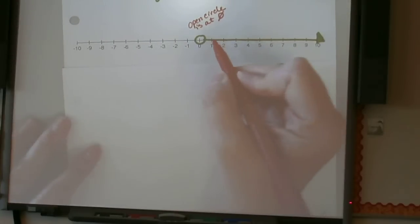Since our shading part is coming to the right, and as we move from the zero this way, we see that numbers are getting bigger. So that means that our numbers are going to be bigger than zero. So whatever variable we have is going to be bigger than zero.